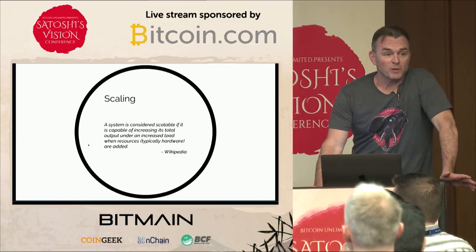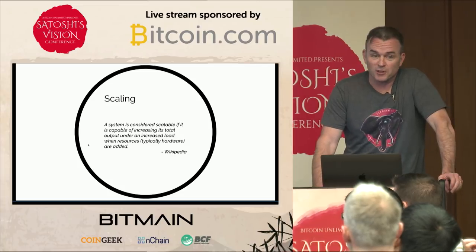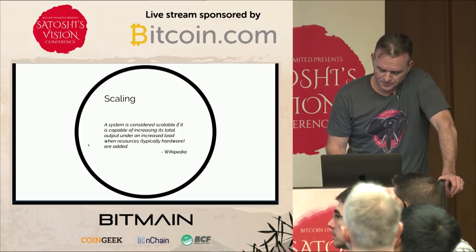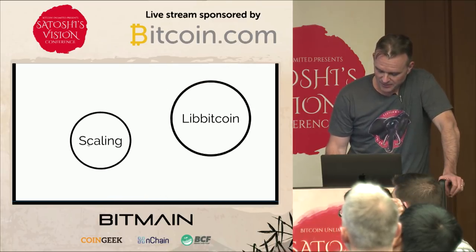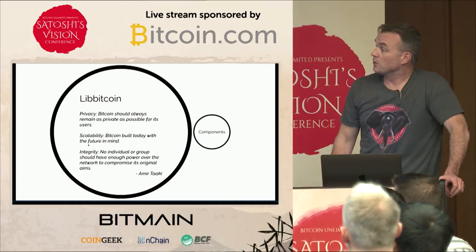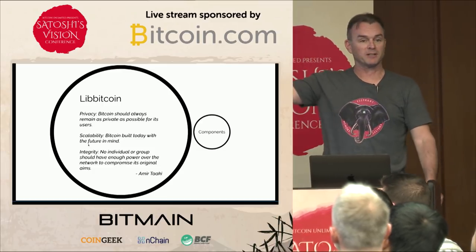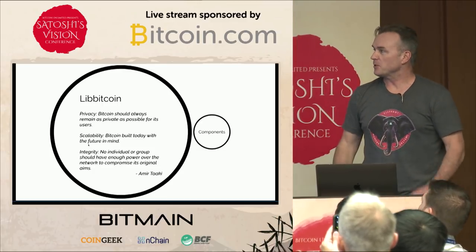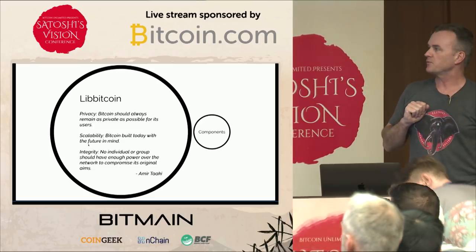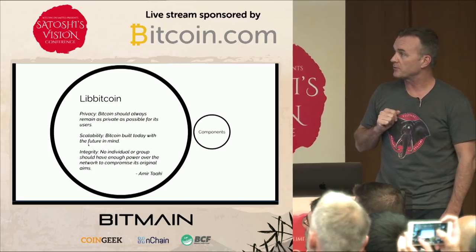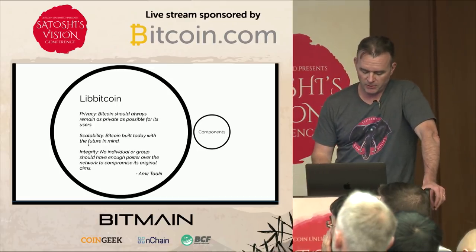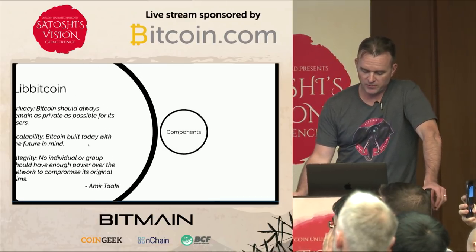So first of all, what's scaling? Add hardware, hopefully get a linear improvement in whatever you're trying to increase — more hardware, more performance. Amir Taaki actually started Libbitcoin. Those are the three principles he laid out in the first post on Bitcoin Talk about what we were after. I focus your attention on the center one: scalability — Bitcoin built today with the future in mind. So we have a definition and objective and I'm going to go through the different components.